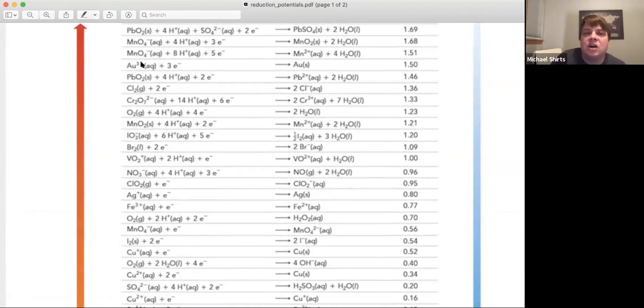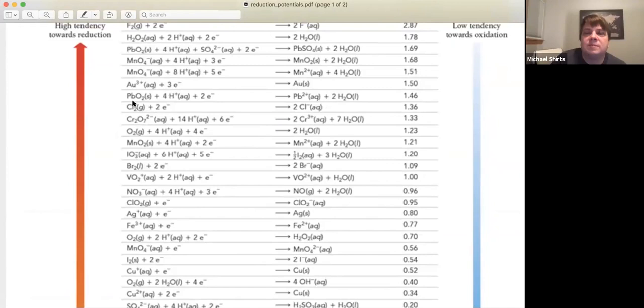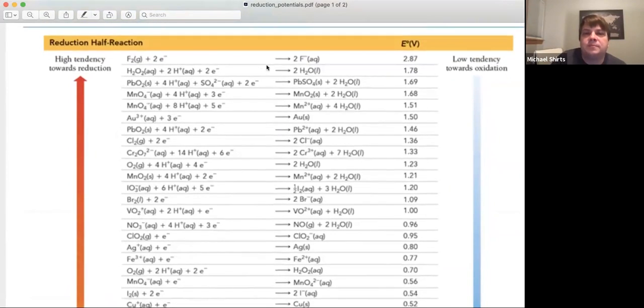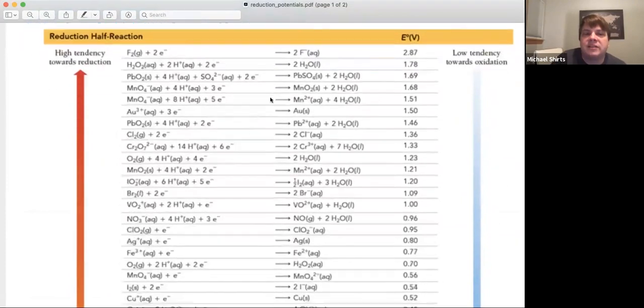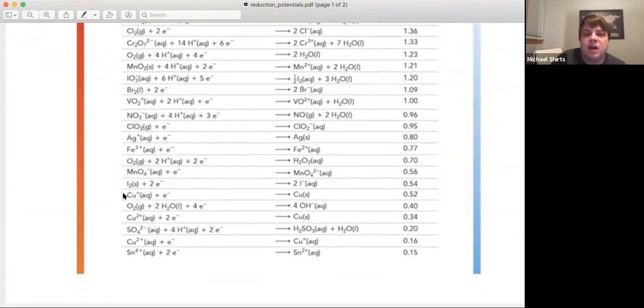Notice that gold and platinum is not in here, but I believe platinum's, I looked it up. It's about 1.20 is the platinum reduction half reaction standard potential. So gold is not going to be dissolved by nitric acid, but silver is, and copper is.